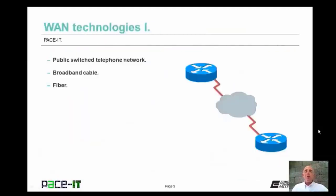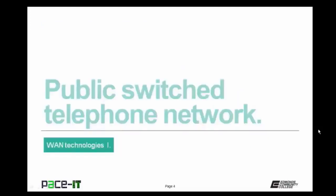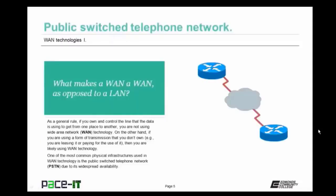Good day, I'm Brian Farrell, and welcome to PACE IT's session on WAN Technologies Part 1. Today I'm going to be talking about the public switched telephone network, then broadband cable, and I'm going to conclude with a brief section on fiber optics. What makes a WAN a WAN as opposed to a LAN? As a general rule, if you own and control the line that the data is using to get from one place to another, you are not using a wide area network technology. On the other hand, if you are using a form of transmission that you don't own — as in you're leasing a line or paying for the use of it — then you are likely using WAN technology. One of the most common physical infrastructures used in WAN technology is the public switched telephone network, the PSTN. Due to its widespread availability, just about everybody has a telephone line run to their house or building.